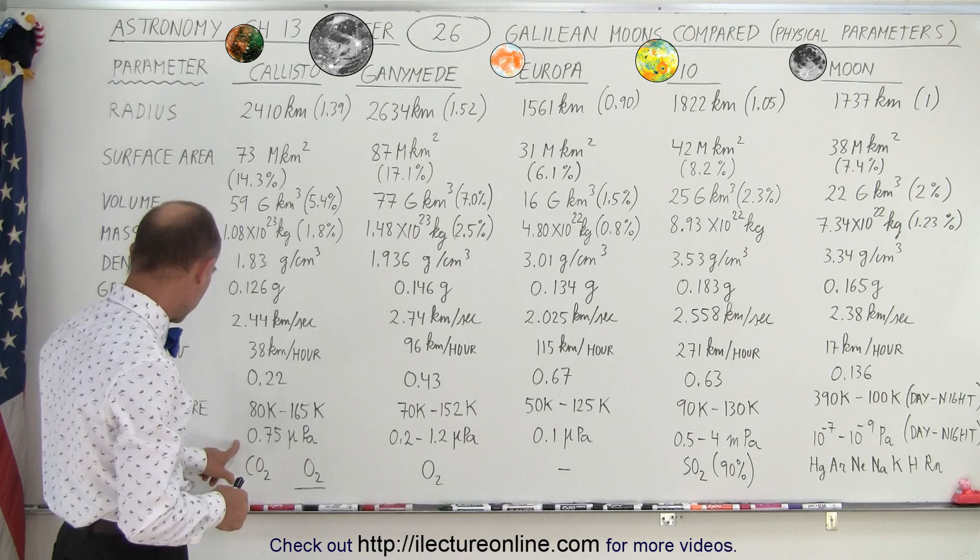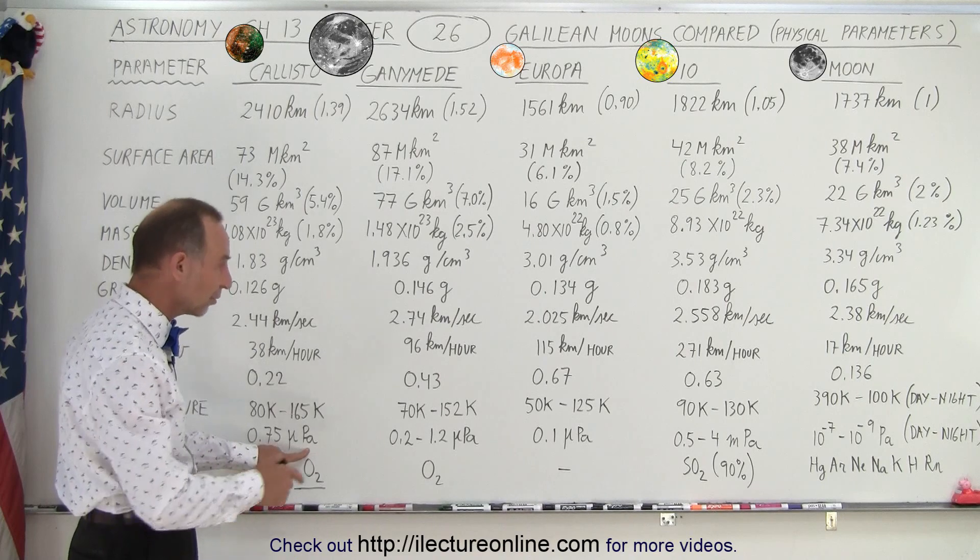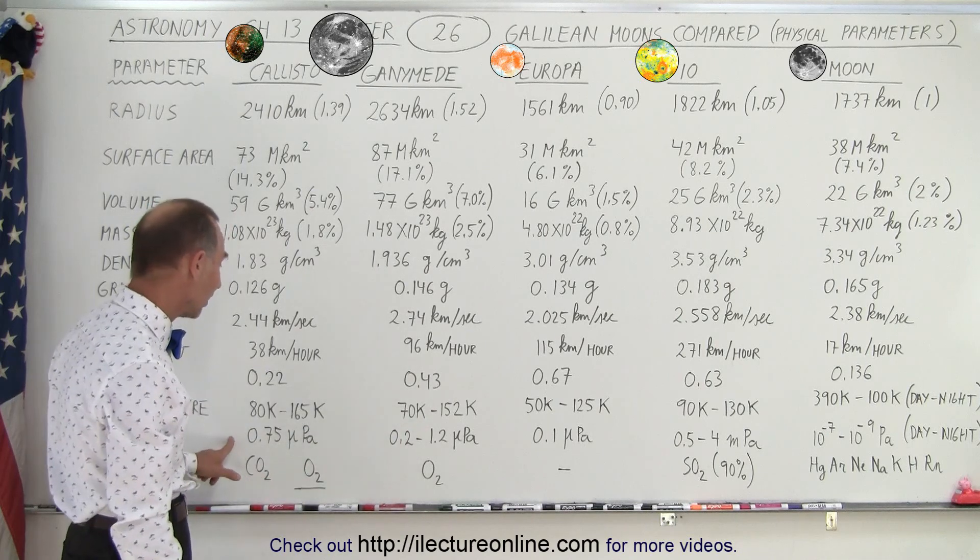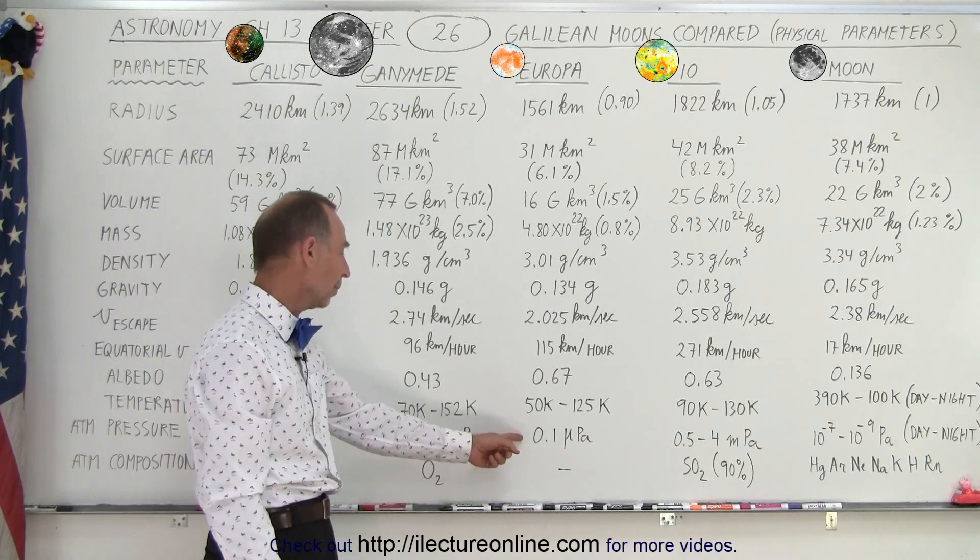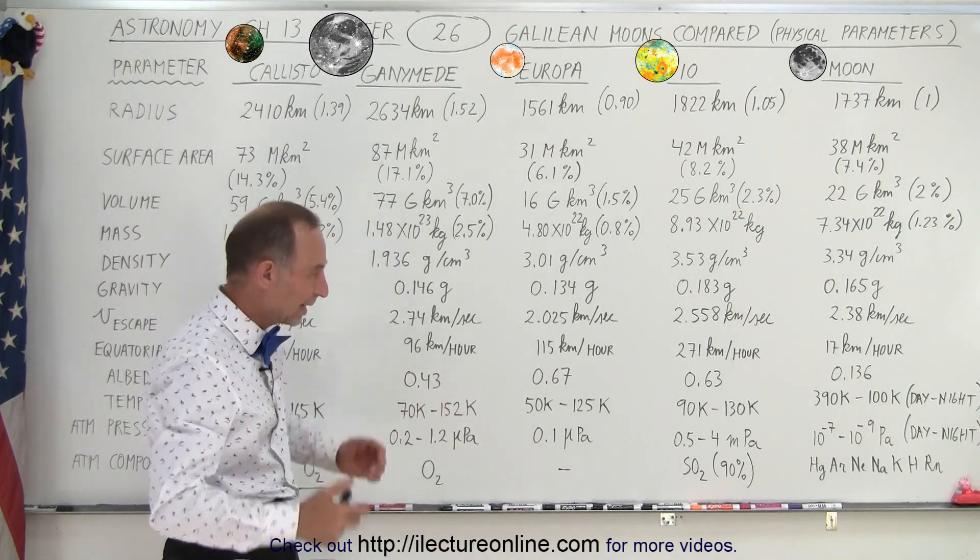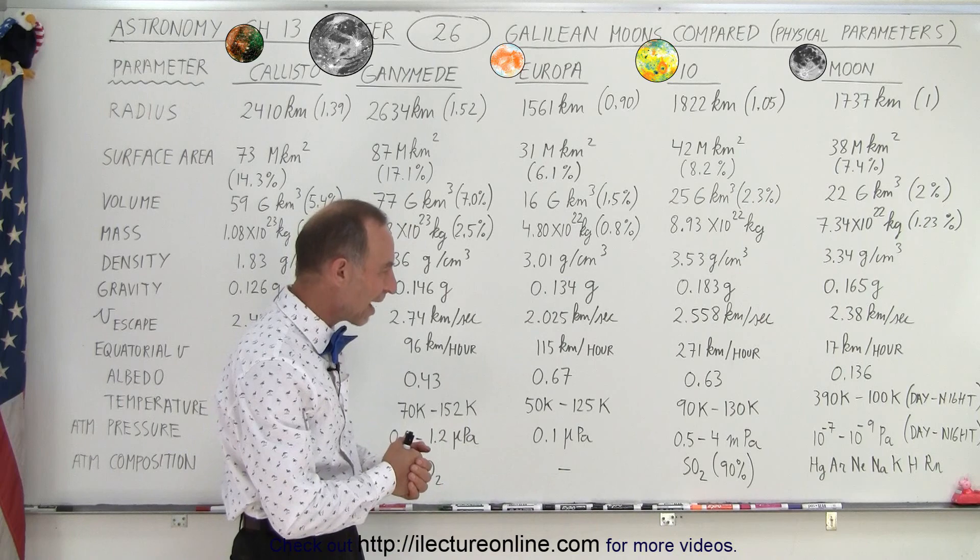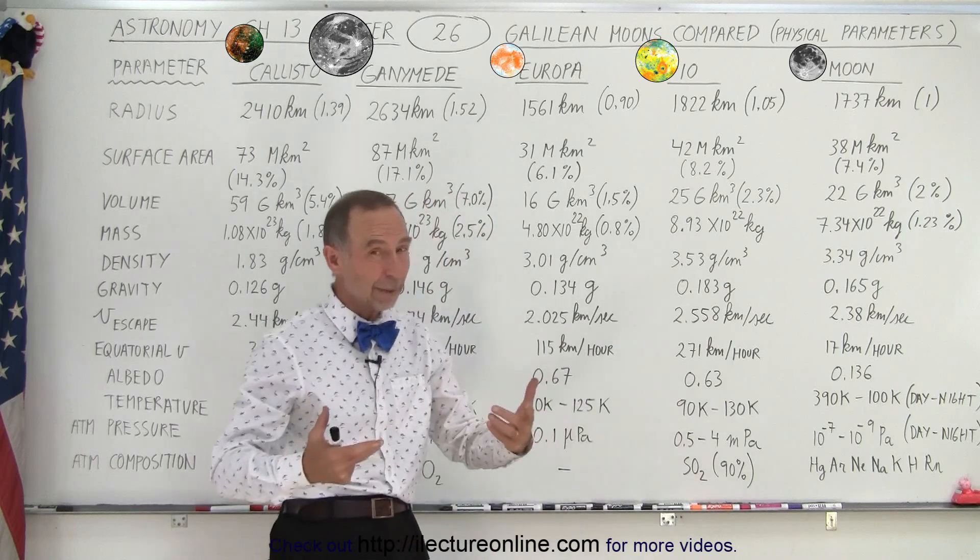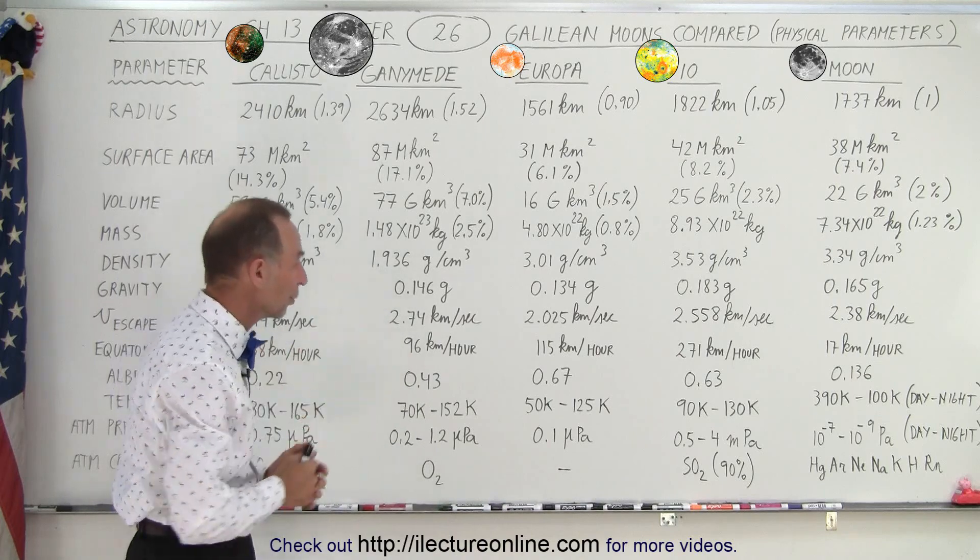What we do see is on Callisto, the atmospheric pressure averages about 75 micropascals. That's quite a bit more than on our moon. Ganymede varies from 0.2 to 1.2 micropascals. So that's even larger than that we see in Callisto. Europa has a very much smaller atmospheric pressure. Again, these are very, very tiny numbers. So don't think of it as really an atmosphere. However, when we get to Io, it's quite different. Io has some measurable atmosphere at 0.5 to 4 millipascals. Notice these are micropascals, these are millipascals. So we're talking about over a thousand times the atmospheric pressure on Io relative to Callisto, Ganymede, and Europa.